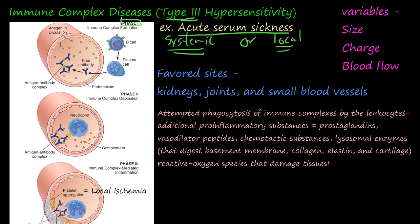Phase one is immune complex formation. In this phase, there is an antigen circulating in your blood vessels — these little green dots represent these antigens. These antigens are first picked up by a B cell, and then a helper T cell version 2 bonds to this and helps the B cell convert into a plasma cell. The plasma cell then starts mass producing antibodies, increasing the concentration of these antibodies.